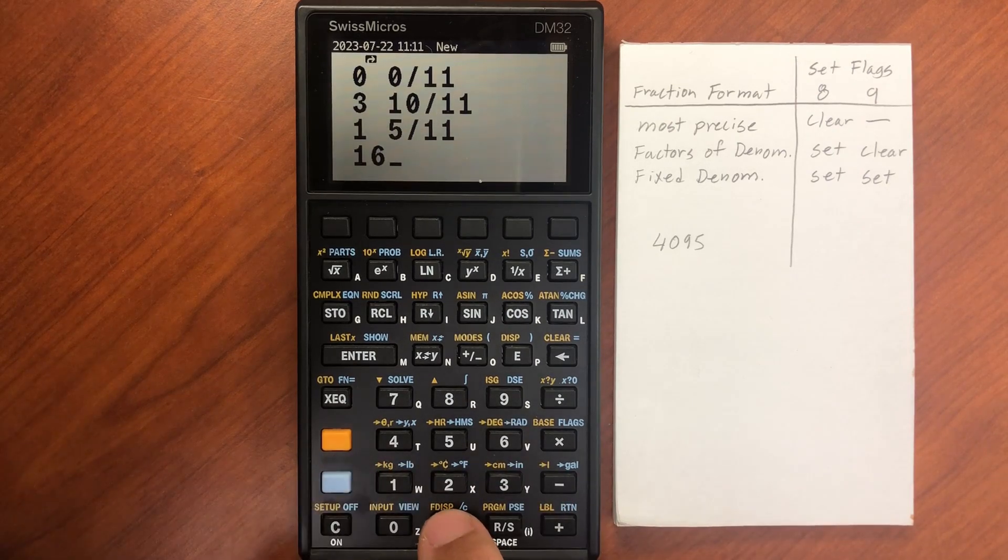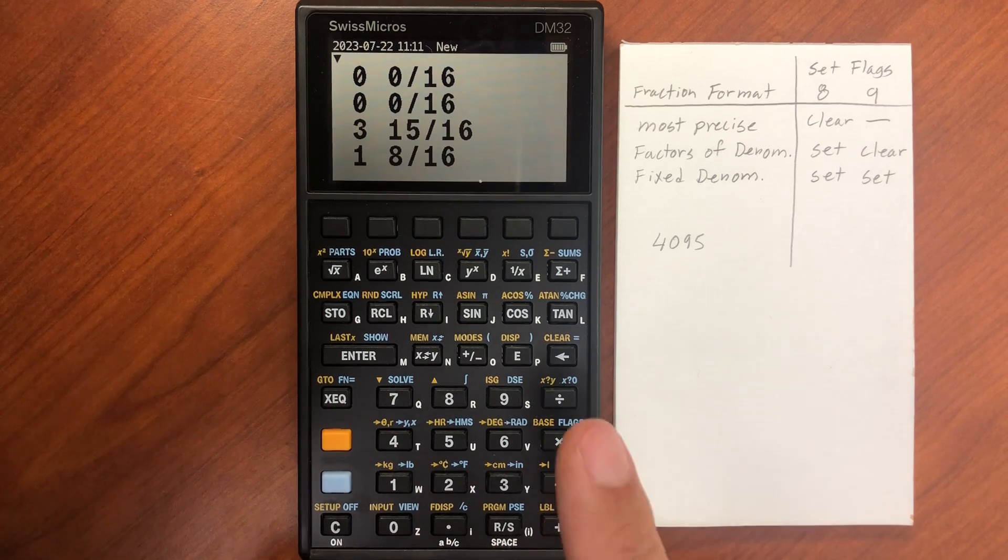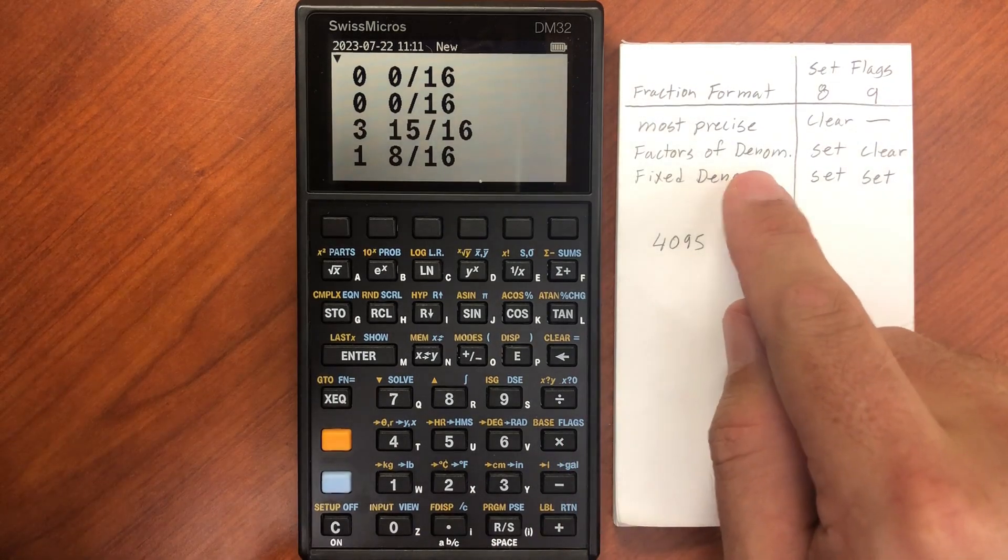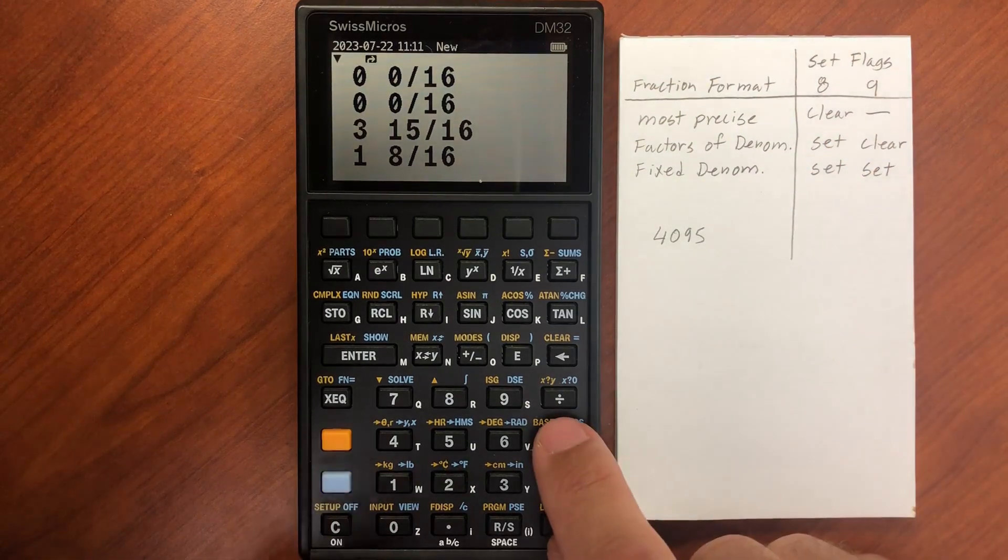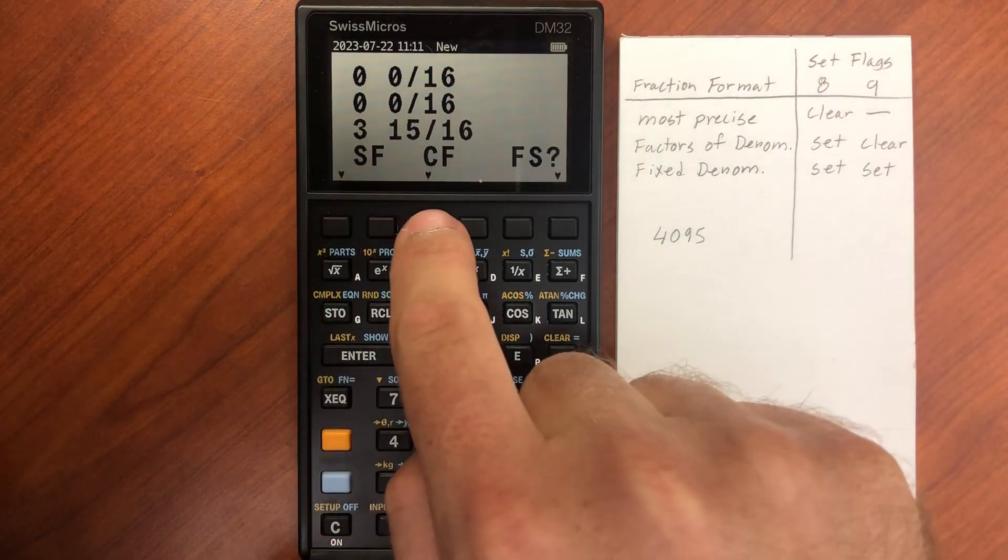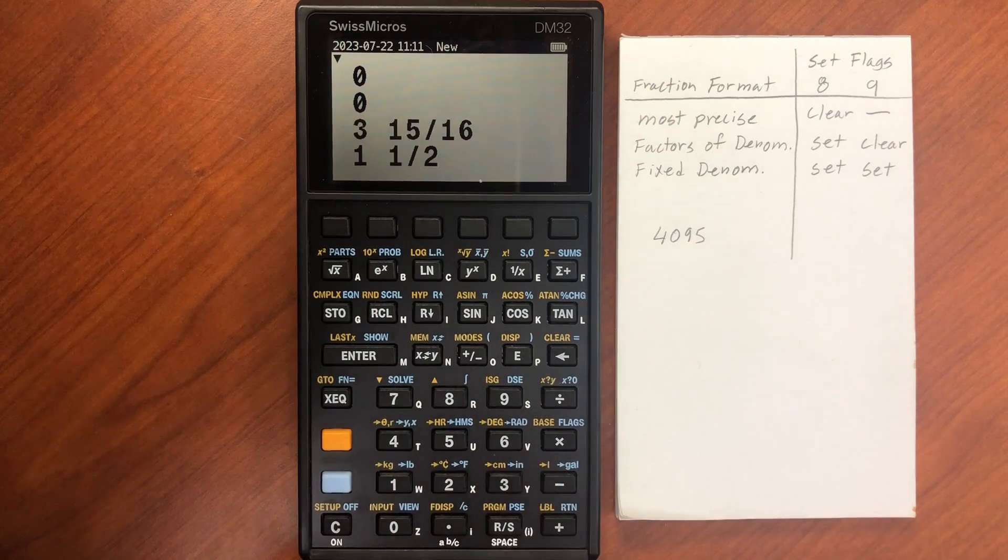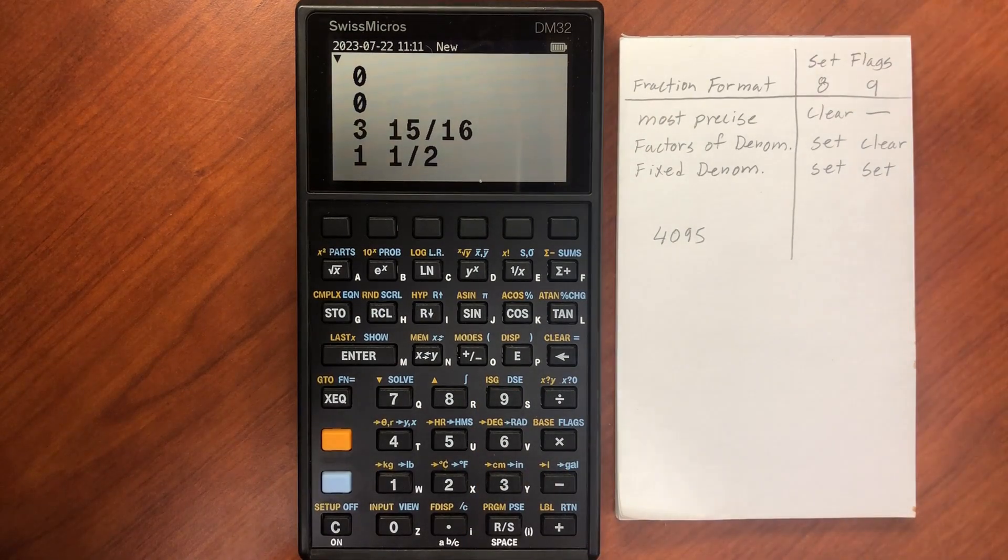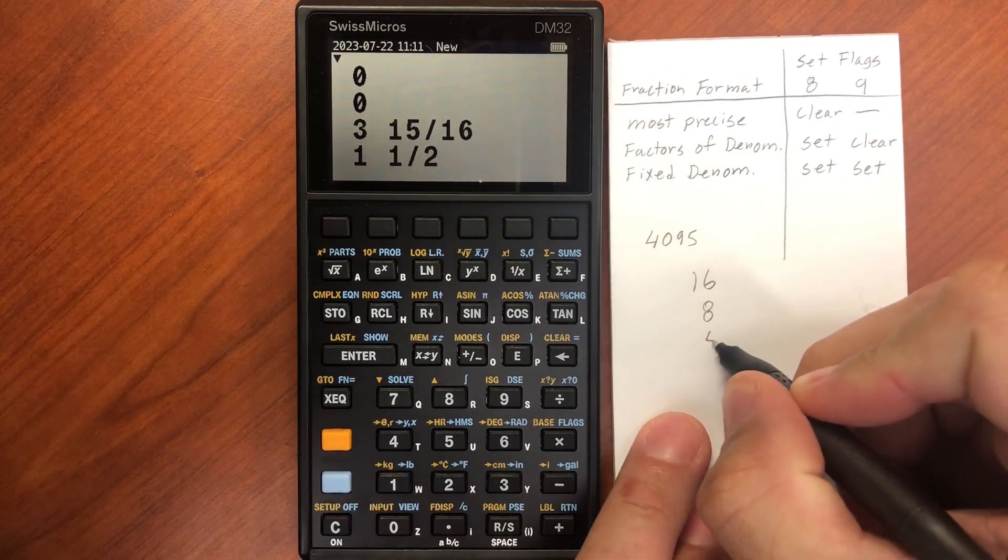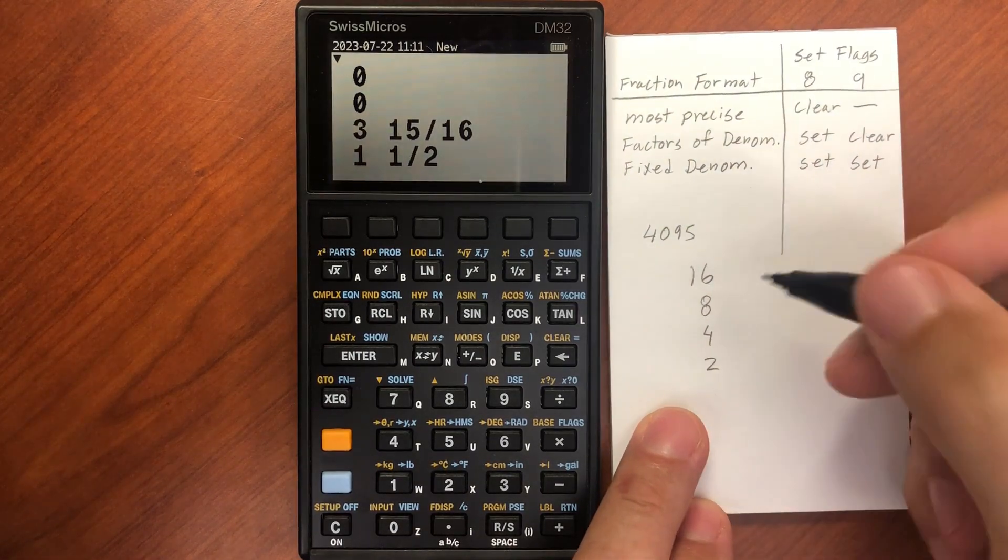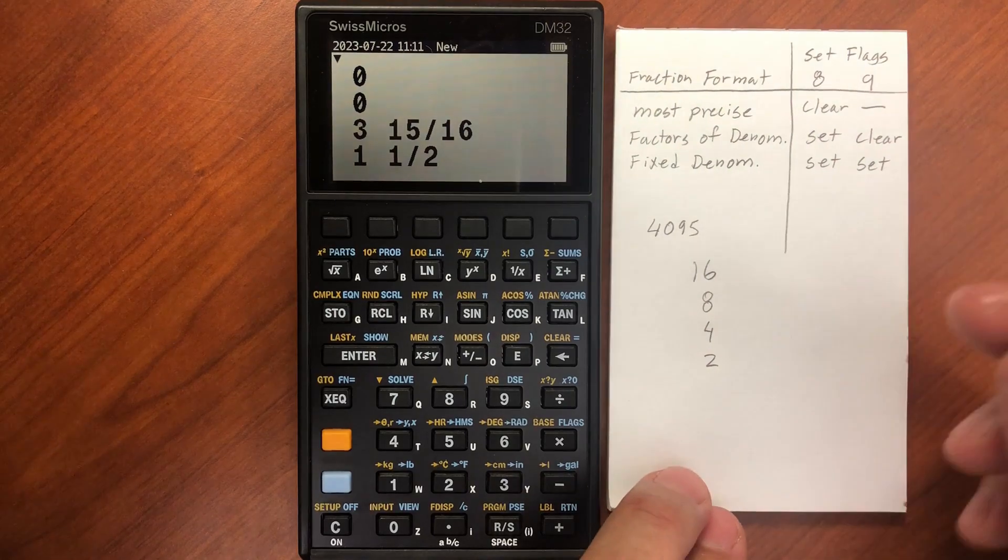So I'm going to set my base to 16ths. And now I'm going to clear my 9 flag. I've already set my 8. So flag, I'm going to clear the 9. So now it will give me a factor of 16 and 8 and 4 and 2—all those factors of 16, it will return.